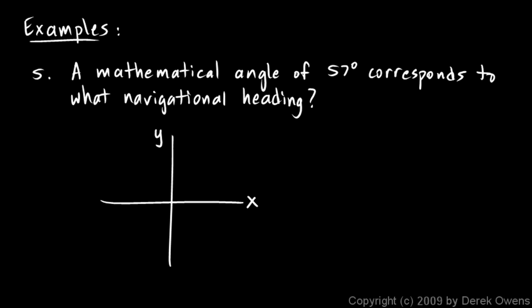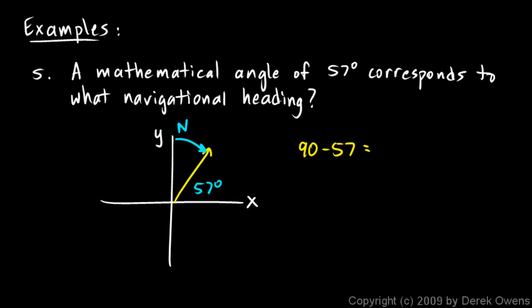Here we have a mathematical angle of 57 degrees — that's a 57 degree rotation from the positive x-axis. That corresponds to what navigational heading? Well, that's the angle rotating clockwise from north, and you can see that this is a right angle, so these two angles together have to add up to 90. So this one is just going to be 90 minus 57. That comes out to 33 degrees. That's our answer.